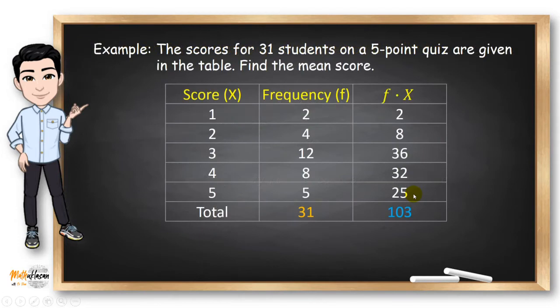In our example, it will be easier for us to build a f times x column. So I got two here by multiplying one and two. I got eight by multiplying two times four. Three times 12 is 36. Four times eight is 32. And five times five is 25. Getting the summation of this fx will give us 103.